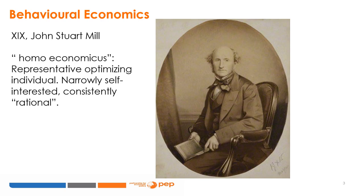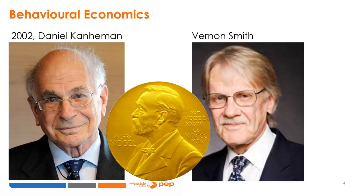In the 19th century, John Stuart Mill coined the concept of homo economicus – a representative optimising individual who is narrowly self-interested and consistently rational from the perspective of classic economic theory. In 2002, Daniel Kahneman and Vernon Smith shared the Nobel Prize in economics for showing convincing empirical evidence that the so-called rationality of the homo economicus was absent from most human behaviour.